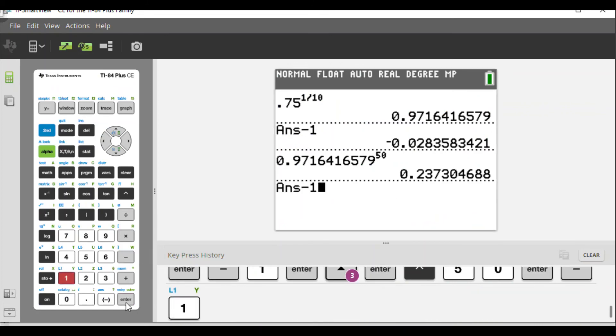And the total decrease after 50 years looks like, in this case, negative 0.762695312.